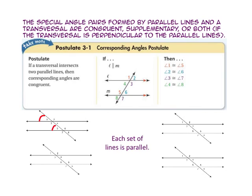In the second set, angle 2 and angle 6 are corresponding, so they are congruent. In the third set, angle 3 and angle 7 are corresponding, so they are congruent. And in the fourth set, angle 4 and angle 8 are corresponding, so they are congruent.